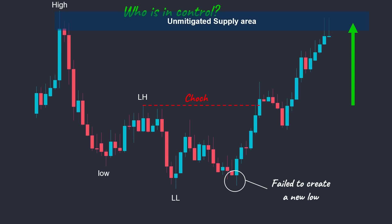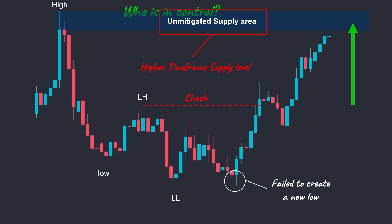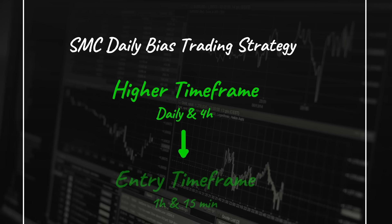All of our explanations were on a single time frame so far, but usually we apply this concept across multiple time frames. For example, this demand zone could have been a key level on a higher time frame. Anytime you want to determine the bias, you need to analyze from a higher time frame down to a lower time frame. As you zoom into lower time frames, you're likely to encounter many false price action signals due to higher volatility. That's why it's crucial to base your analysis primarily on the daily and four-hour time frames. Trading price action setups tend to have higher win rates on the hourly time frame compared to the one-minute, as lower time frames carry more noise. To identify the daily bias, we open the daily and four-hour charts and apply this concept to determine who is in control, then zoom into our entry time frame and search for trading opportunities aligned with the higher time frame bias.